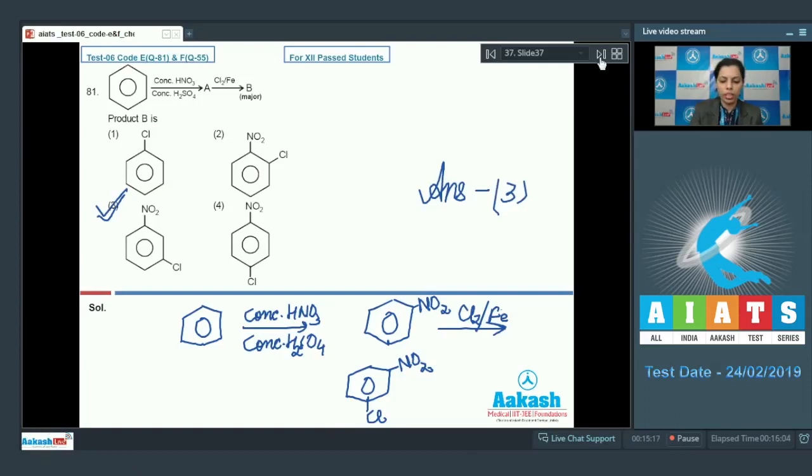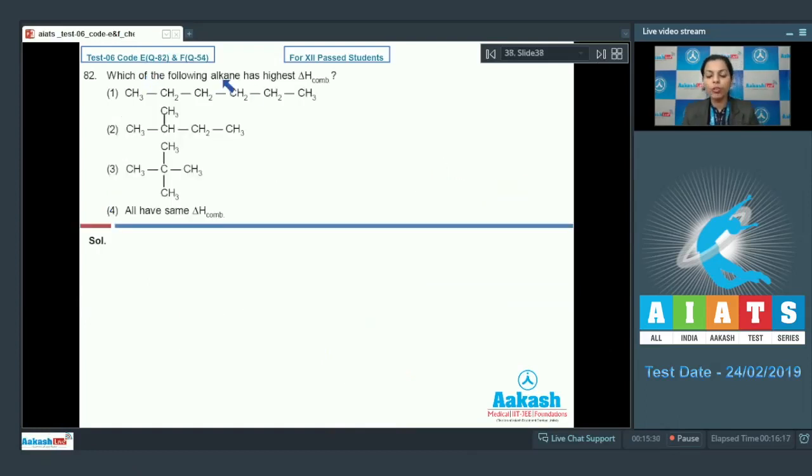After that question number 82. Which of the following alkane has highest delta H of combustion? You should always remember that this delta H of combustion depends on the number of carbon atoms in the carbon chain or the ring.